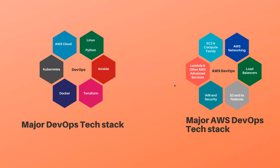In this slide, I'm trying to explain the DevOps tools commonly used in the IT industry. On the left side, you can see the tools used by DevOps engineers. On the right side, you can see the tools used by AWS DevOps engineers. If we speak about general DevOps, you can see that AWS is a part of it, and you are expected to be aware of Linux, Python, Ansible, Terraform, Docker, and Kubernetes, along with supporting technologies like Jenkins, SonarQube, Nexus, etc.